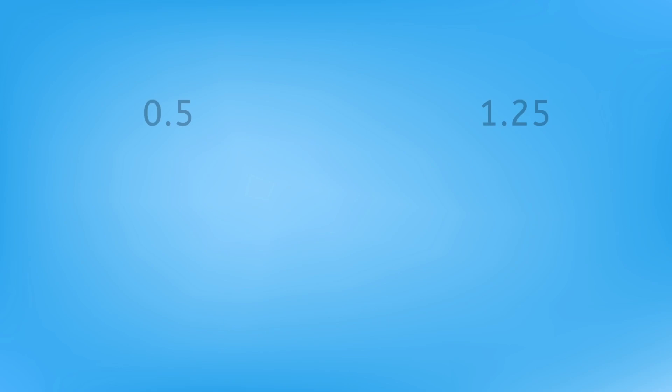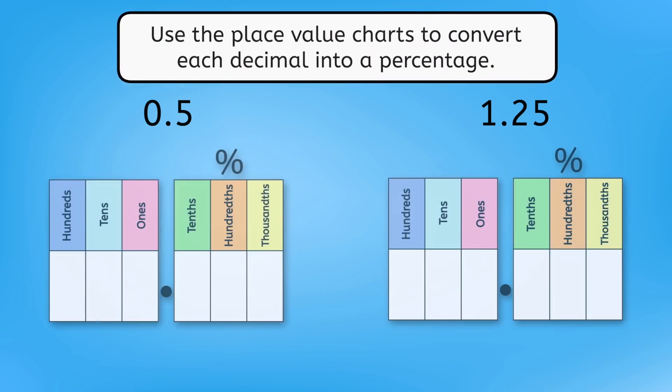But what if we have decimals with digits in other place values too, like five tenths or one and 25 hundredths? How can we change each of those into a percentage? Pause here to try using the place value charts to convert each decimal into a percentage.